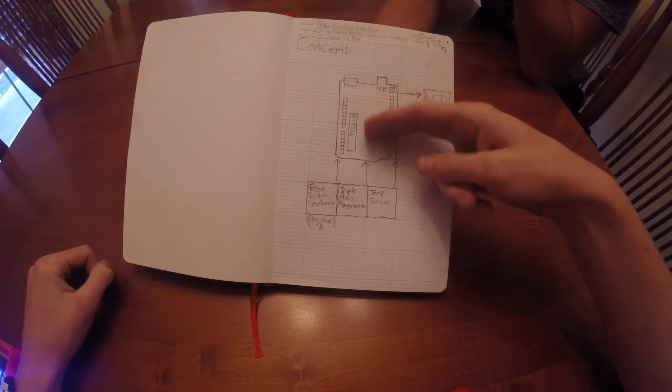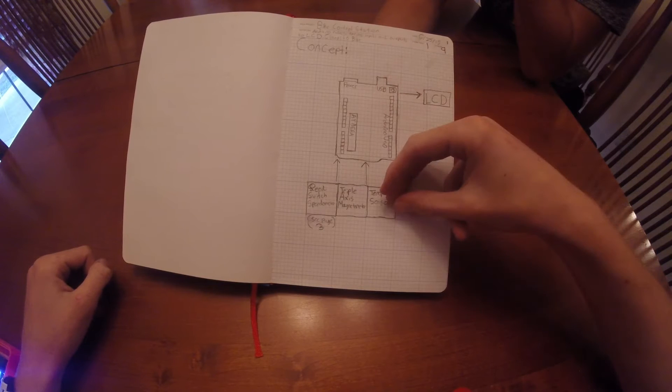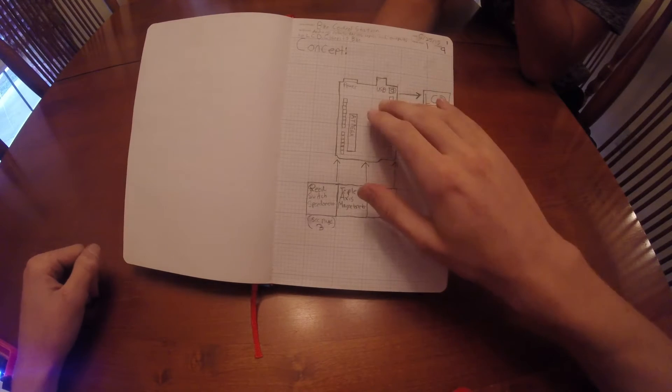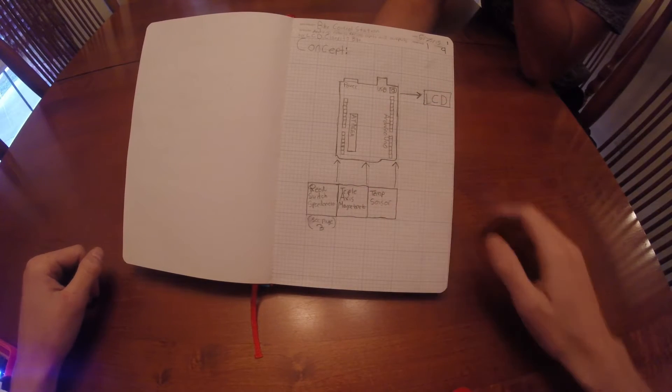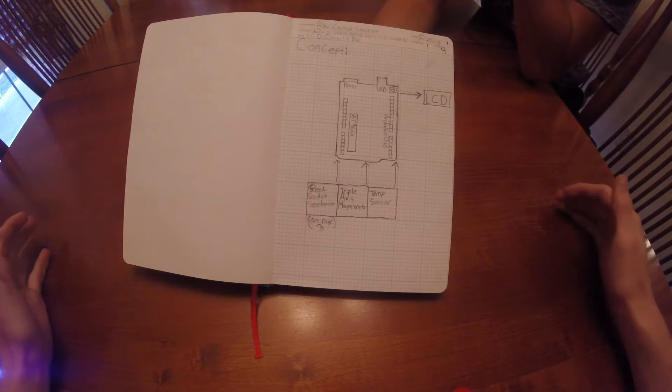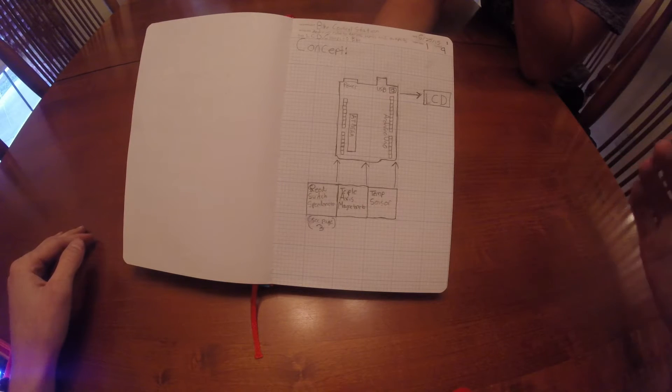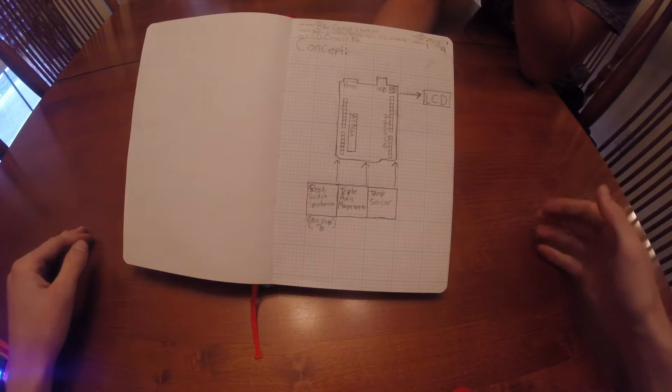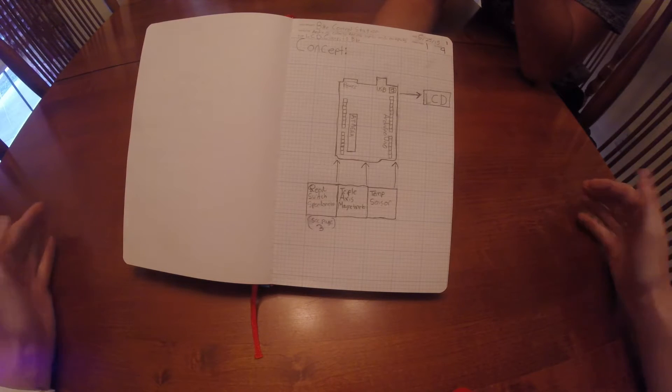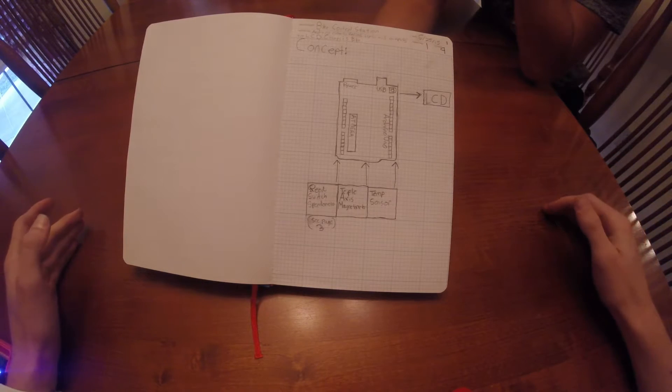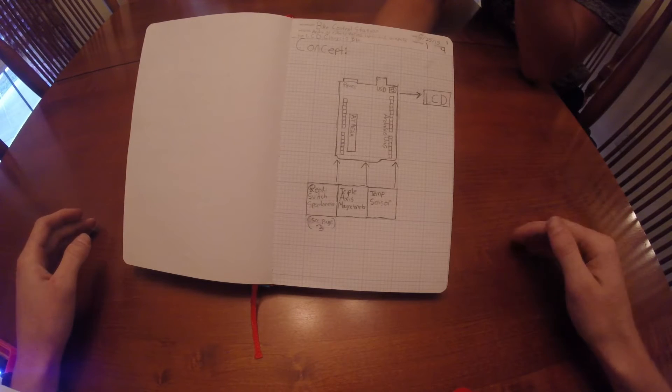So that would all go to the Arduino. The Arduino would read information being sent from those sensors. It would then output those to an LCD. So when I'm riding my bike, I can see what my speed is, what my direction is, and how hot it is outside. I plan on adding more sensors in the future, but for now, I think I'll just stick with those three.